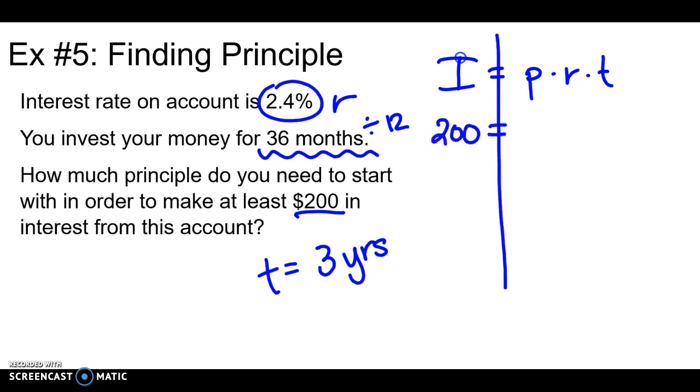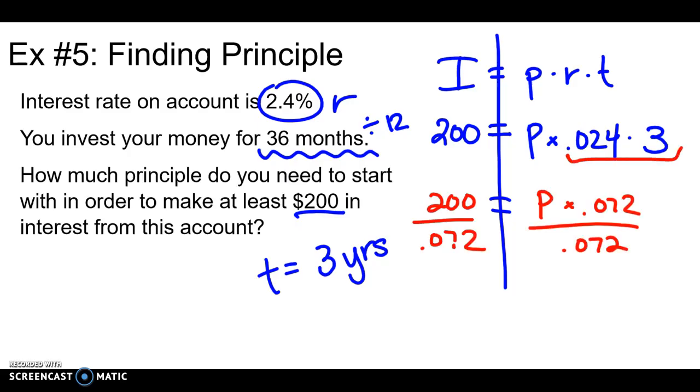So we'll plug everything in where it goes. I want $200 in interest. I'm looking for the principle. My rate as a decimal. And multiply that by three years. So I'm going to multiply these two numbers together in my calculator so I can solve for P. So this gave me 0.072. So I'm going to divide by that 0.072 on both sides in order to get P by itself. And it looks like P is going to be $2,777 and $0.77. So you'd have to start with at least that much money in your account at the beginning in order to earn $200 in interest.